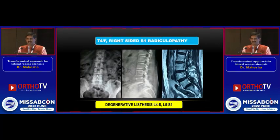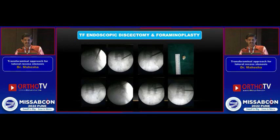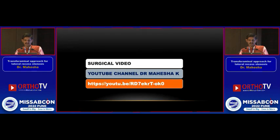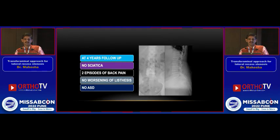This is another patient, an elderly lady with spondylolisthesis at two levels, with disc herniation at L5-S1 level. You can see the lateral recess stenosis at L4-5 and disc herniation at L5-S1 level. Both were approached with a single incision. You can see this video and the post-operative MRI — both levels are decompressed well. At four years follow-up, the patient is doing extremely well. She has come twice only for some back pain, and there is no worsening of the spondylolisthesis.